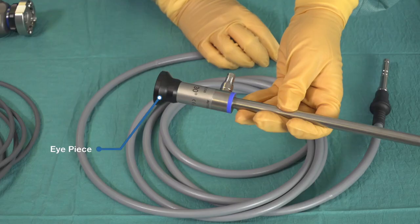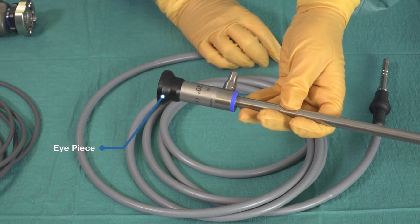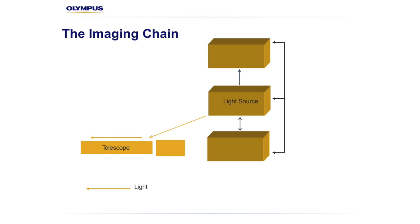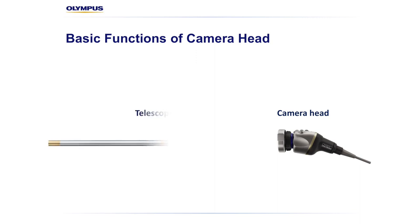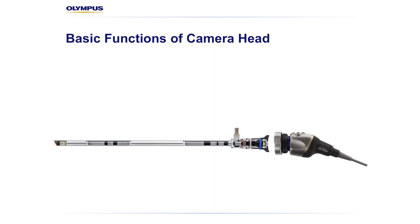Now that we have our telescope ready to deliver light and view the anatomy, how do we actually view the operative field? We could eyeball through the eyepiece here — which we call the ocular — but this isn't necessarily ergonomic nor conducive to maintaining a sterile operating field. What I want to do is digitize this image so that I can transmit it onto a monitor, so that my assistant, scrub nurse, anesthetist, and everybody in the room can see where the procedure is at. This leads to the third part of our imaging chain: the camera head. The camera head is responsible for receiving the image from the optics of the telescope and turning them into a digital image signal.